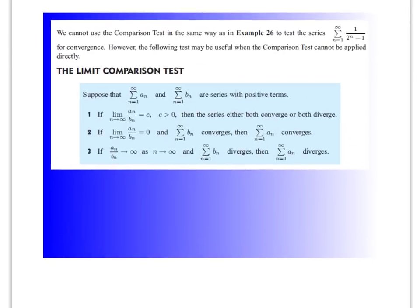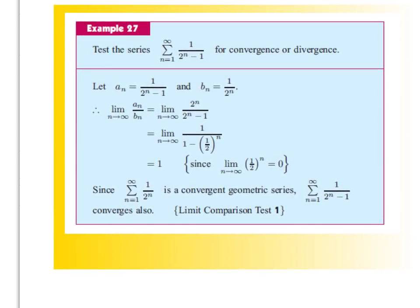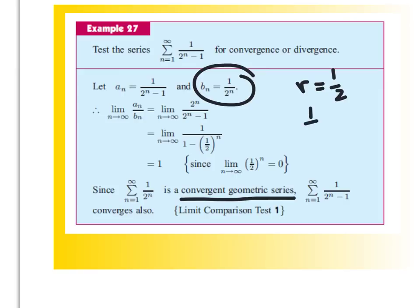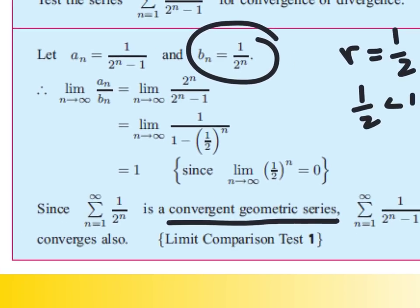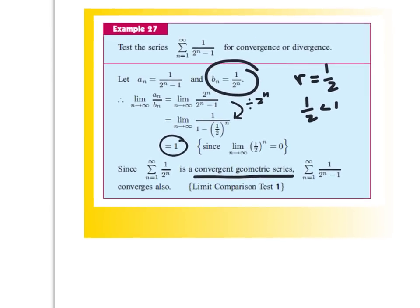Here's a breakdown of the limit comparison test. To test for convergence, the comparison chosen is the clearly convergent geometric series 1 over 2 to the n, where r equals 1/2. Since 1/2 is less than 1, that's a convergent series. Using the limit comparison test, it looks like they divided everything by 2 to the n top and bottom, and the limit came out to be 1. Since the limit comparison test gave 1, both series behave the same — they both converge.